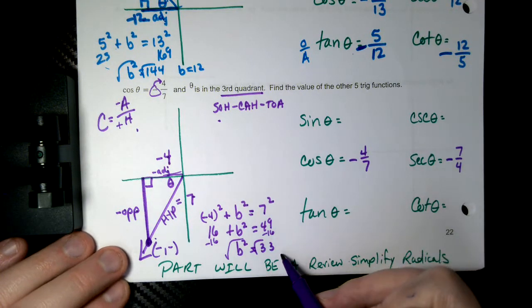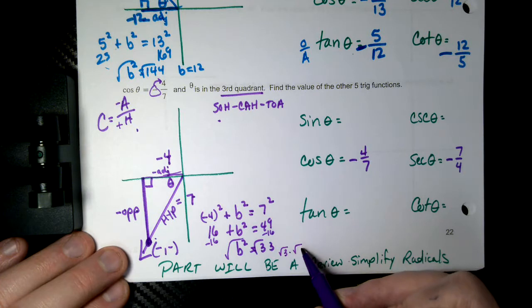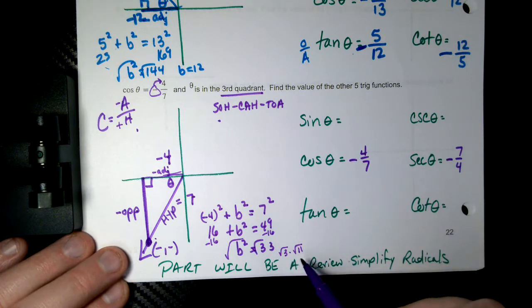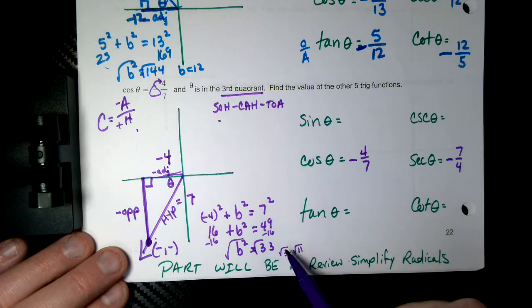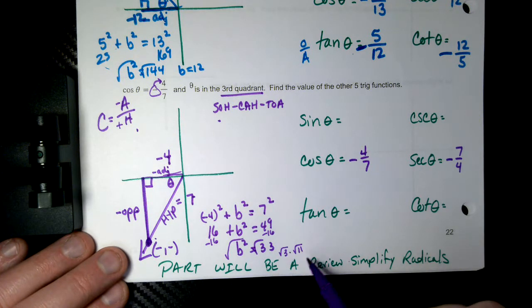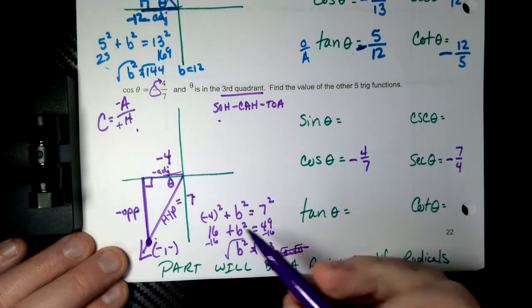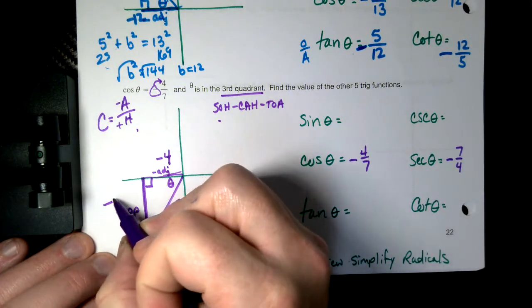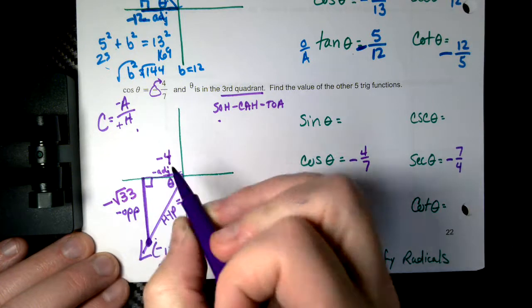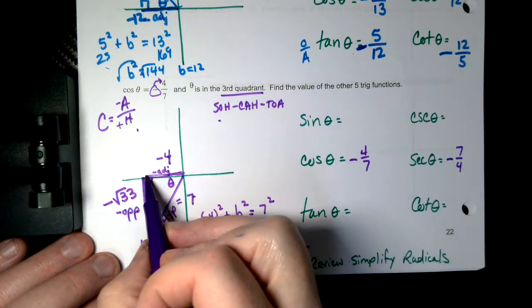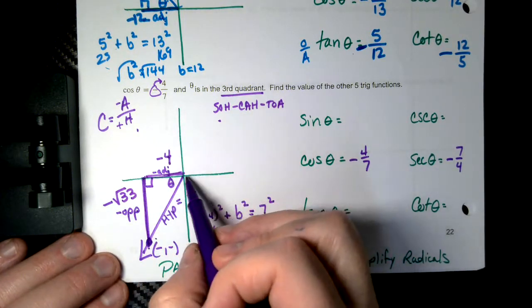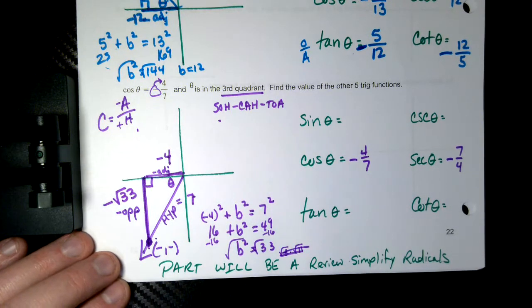So square root of 33, some kids might think, well, you could split it in the square root of 3 and square root of 11. But you don't have to do that. Neither one of those has a square root. There is not a nice square root of 3 or a nice square root of 11. Those are decimals as well. So we're going to leave it as a negative square root 33. It's a negative x and a negative y. So it's a negative adjacent and a negative opposite.